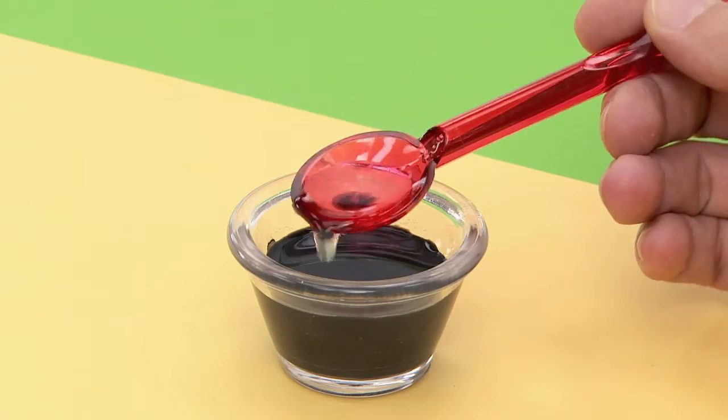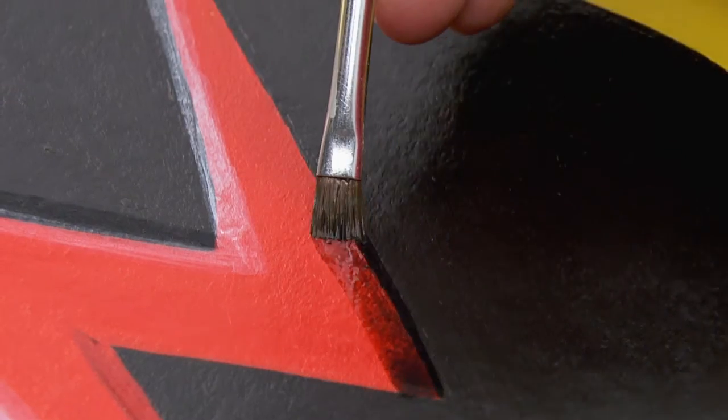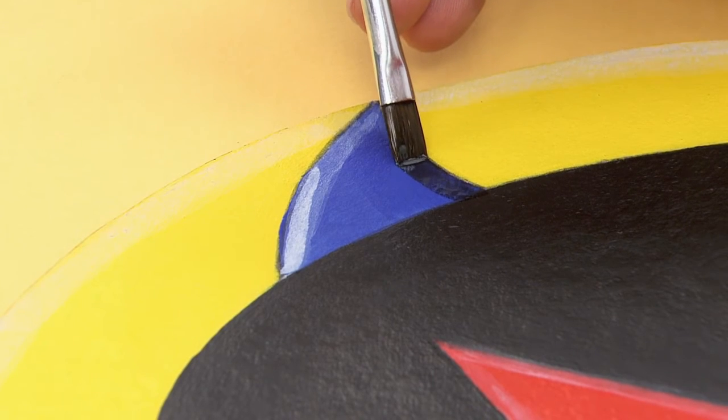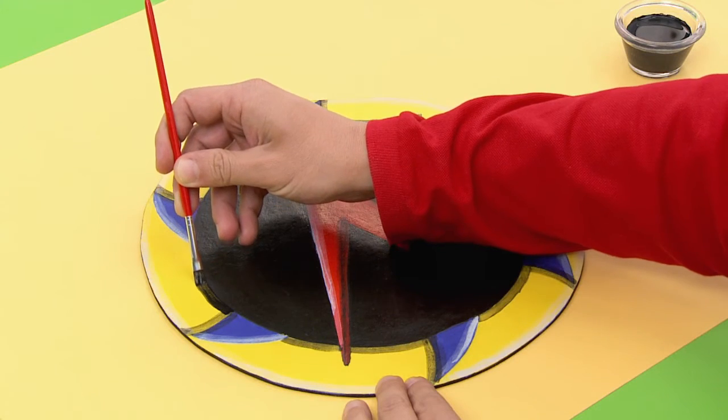Now mix the black paint with water and outline the shape. What a great effect! It looks as if it's moving in the air.